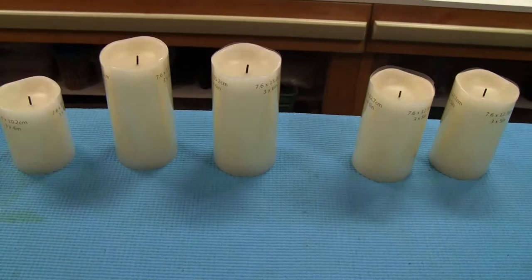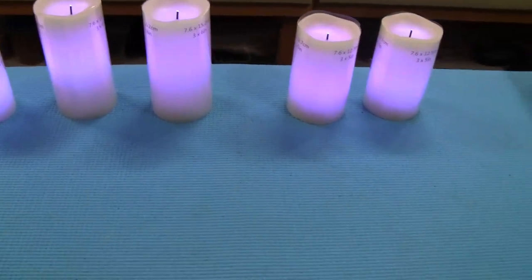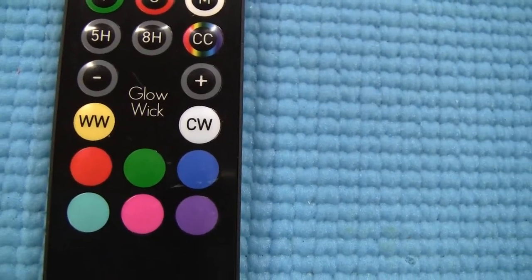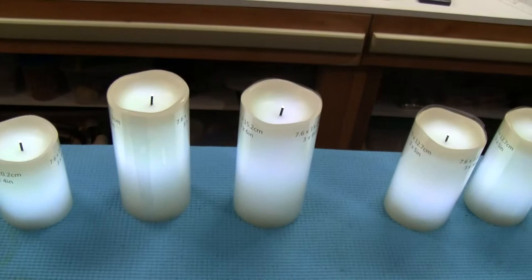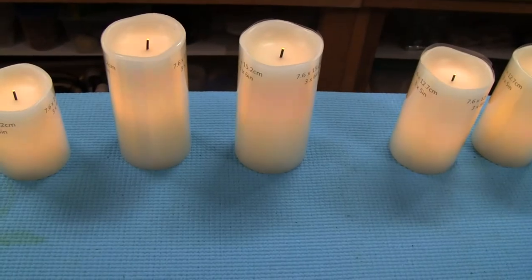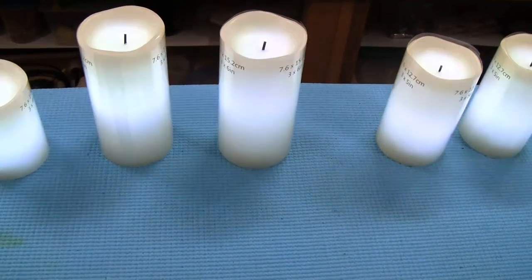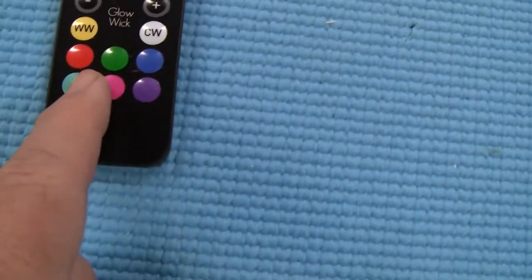You have a W and a CW - one is warm white, one is cool white. I press the cool white, they're a little bit brighter. Warm white is easier on the eyes, cool white is a little bit brighter. And you've got your different colors.